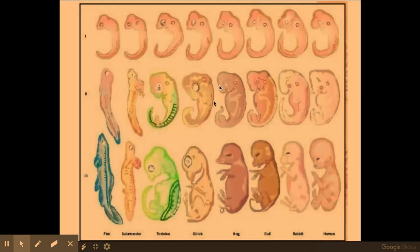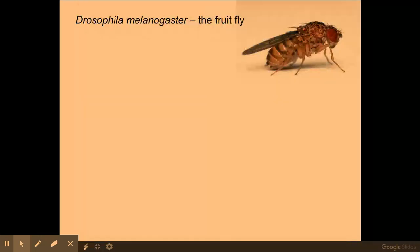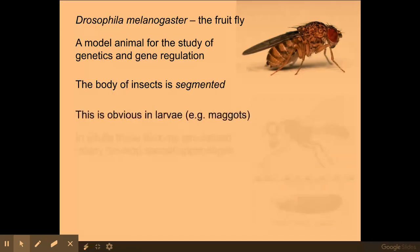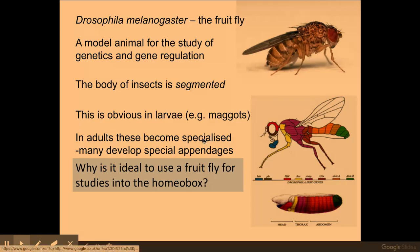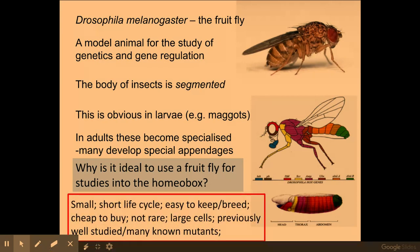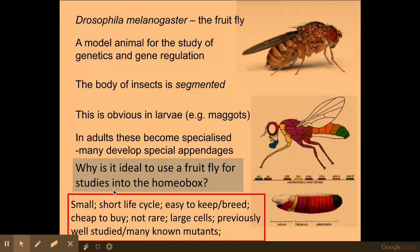All of this segmentation and embryo development is determined by the hox genes. We normally use the fruit fly to study hox genes because it has very clear segmentations in its larvae and maggots, and we can see specialised appendages in the adults. The main reasons are their short lifespan and small size, making them easy to keep and breed, and we can induce mutations and see their impacts very quickly.